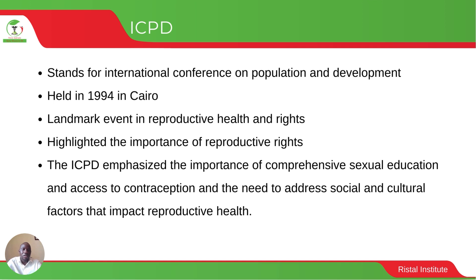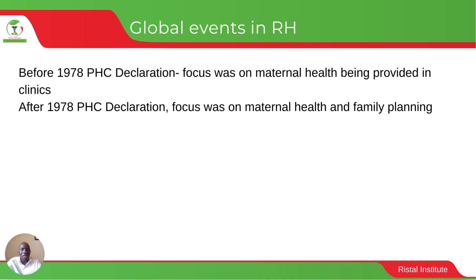The 1994 Cairo Conference marks one of the key events in the history of sexual and reproductive health and rights, because it highlighted the importance of reproductive health and reproductive health rights. It advocated for increased access to comprehensive sexual education and contraception, and also recognized the role that cultural and social factors play in affecting reproductive health, emphasizing the need to address these factors.